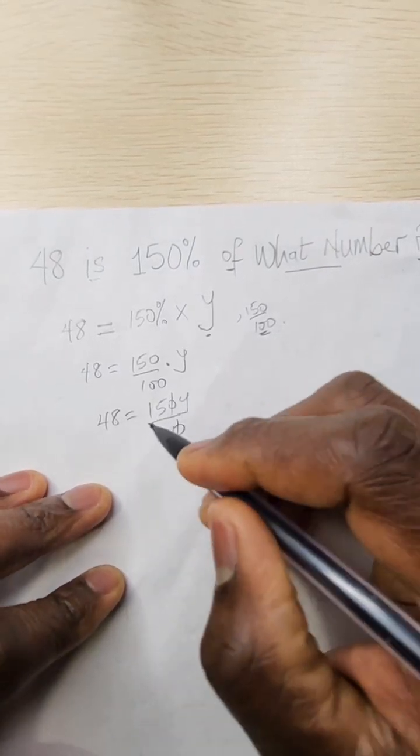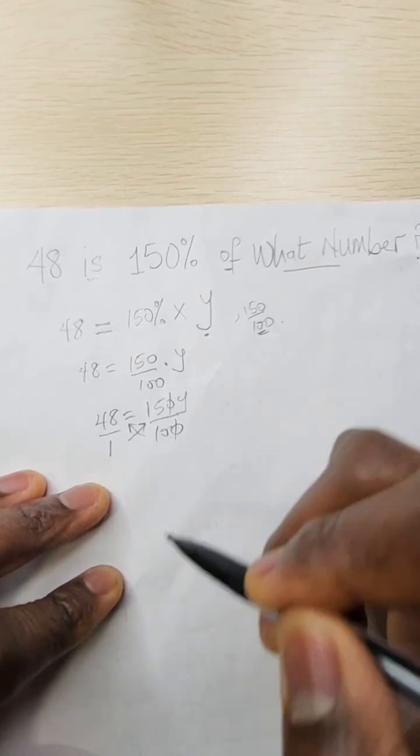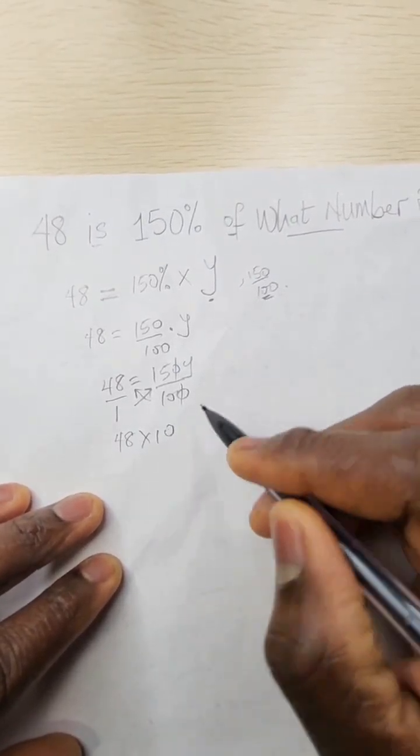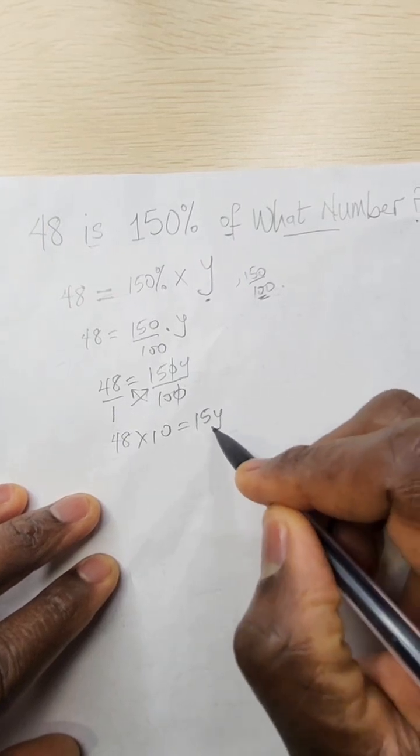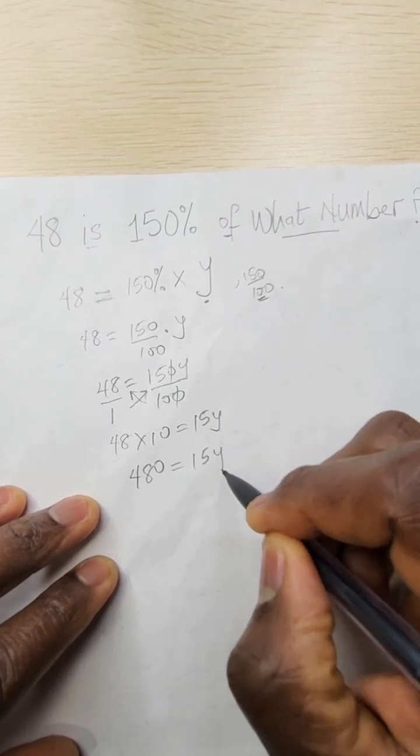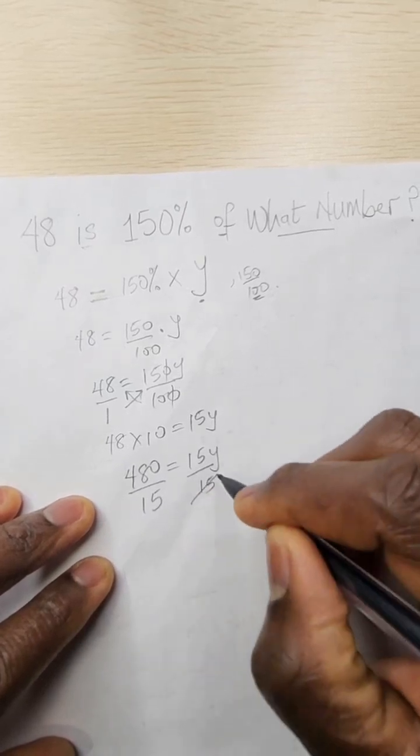That can cancel out and then this is equal to 1. We just cross multiply. Now we have 48 times 10 equals 15y. 480 is equal to 15y. We divide through by 15, divide both sides by 15.